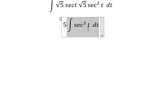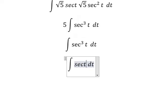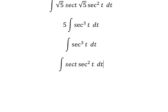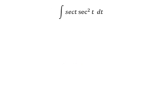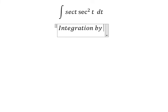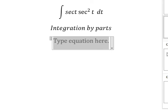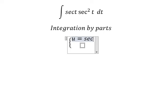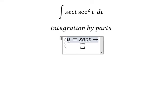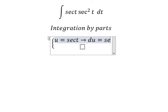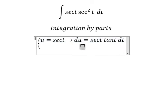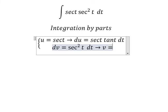Now I will concentrate on this part only. We can split secant cubed of t into secant of t times secant squared of t. Next, we need to use integration by parts. I will put u equals to secant of t. We differentiate both sides, and we have du equals to secant of t tan(t) dt. And dv equals to secant squared of t dt.